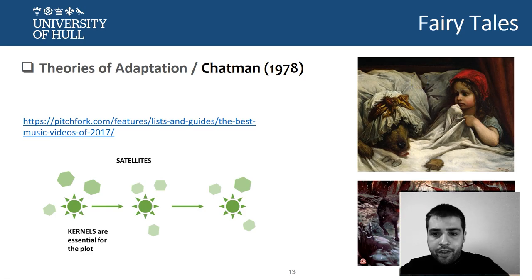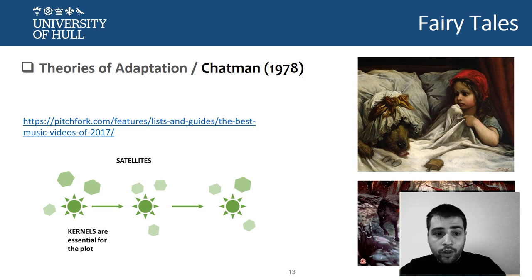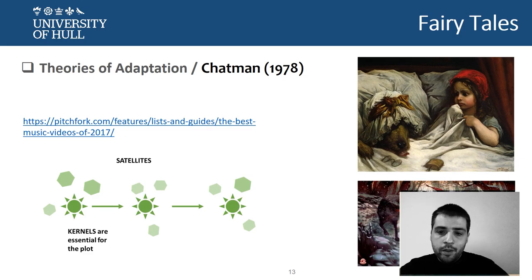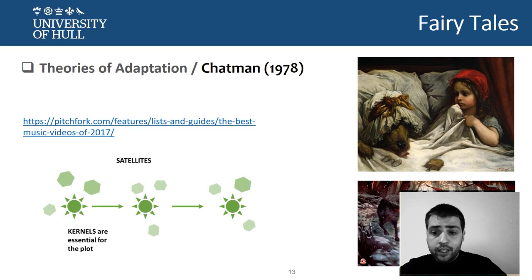Narrative theory evolved to differentiate between the ways stories relate to each other. Theories of adaptation define that there are main elements within a story — kernels — but there are also other elements that are just fillers, called satellites.